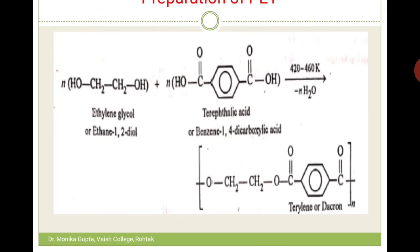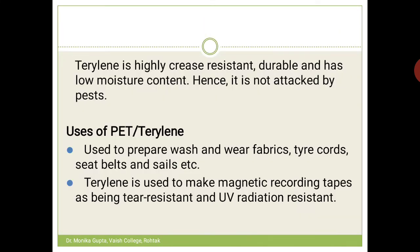Terylene is made from glycol and terephthalic acid. Its properties: it is highly crease resistant — fabrics made from terylene do not crease no matter how you fold them. It is very durable and its moisture content is very low, so terylene fabric dries very quickly.